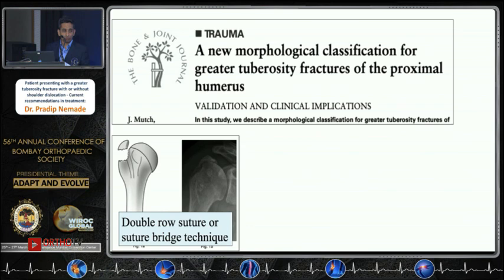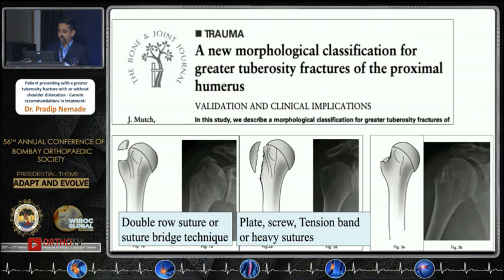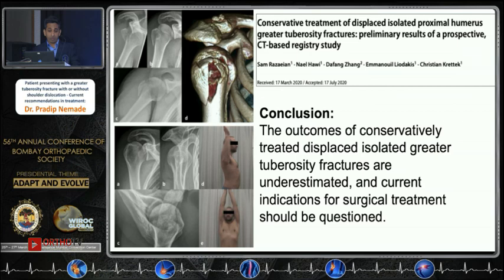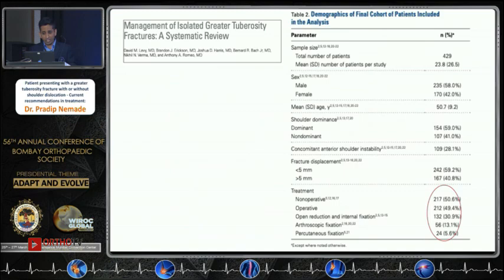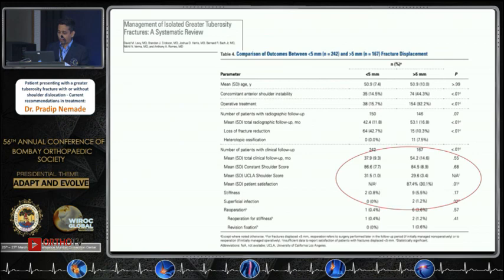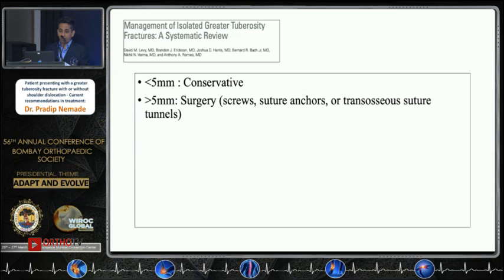Based on classification, a smaller fracture is best addressed with double-row fixation; a split fracture can be fixed with a screw or plate; and for impression fractures, anchors are generally preferred though no specific recommendations have been made. Regarding conservative treatment, several articles show that conservative results are also good and should not be underestimated. A systematic review recommended that fractures displaced less than 5 mm can be treated conservatively, while those displaced more than 5 mm require surgery — using screws, suture anchors, or traction sutures — though no one method has been proven superior.